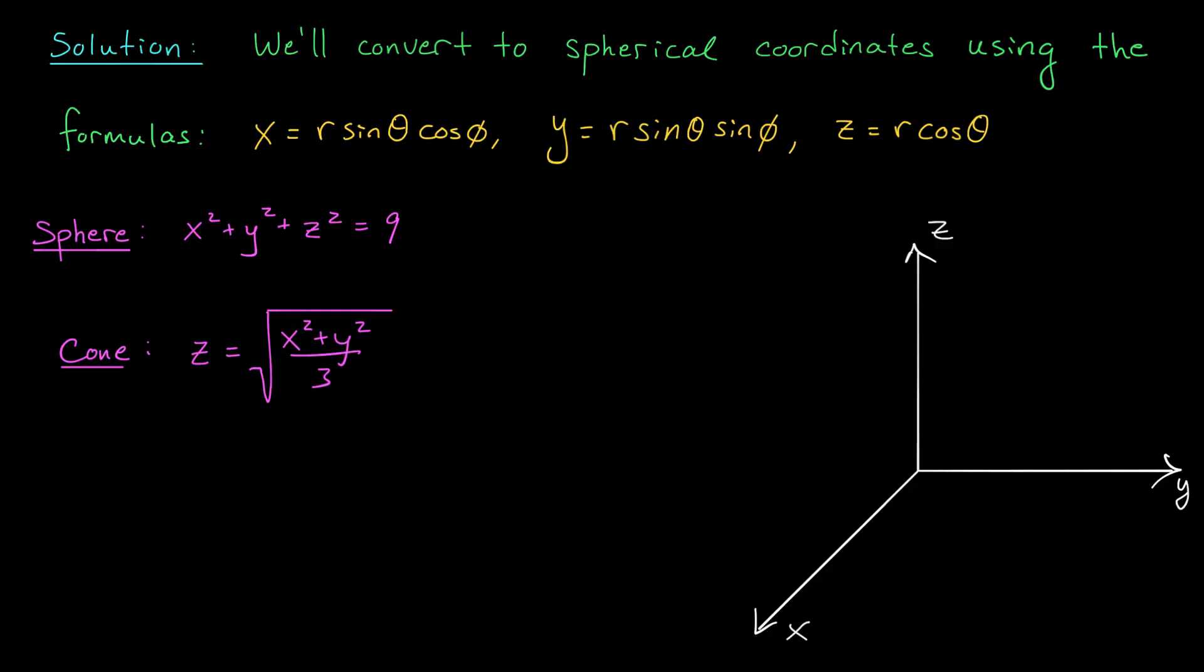Our solid region E lies inside this sphere and above this cone. In our last lesson, we learned that both spheres and cones can be described really nicely in terms of spherical coordinates. And that's a good thing, because these equations are pretty messy. So I'm going to go ahead and make the conversion from Cartesian to spherical coordinates, and hopefully the equations clean up. Let's start with the sphere. x² + y² + z² = 9. Now I happen to recognize this as the equation of a sphere of radius 3. So in spherical coordinates, we could write it simply as r = 3.